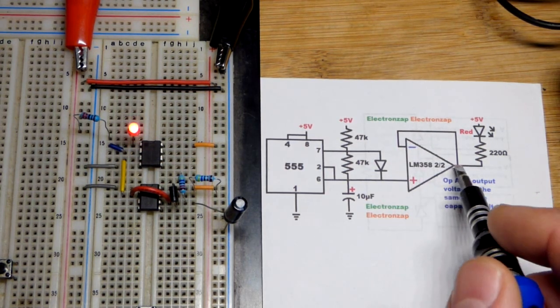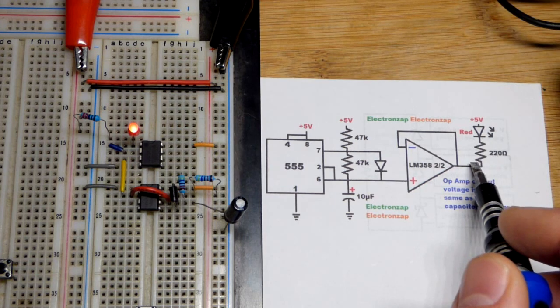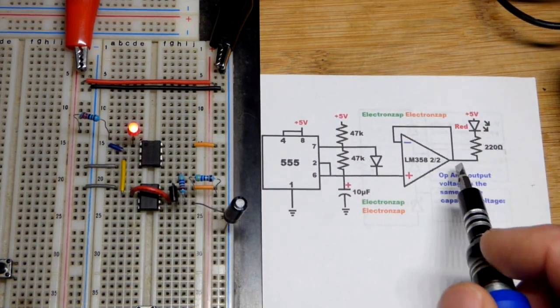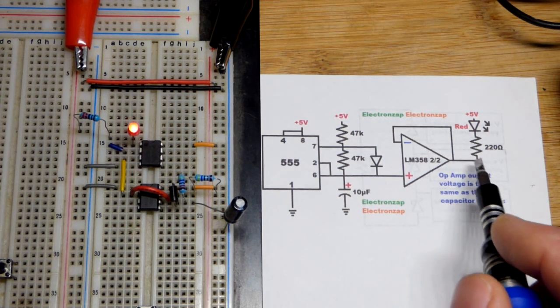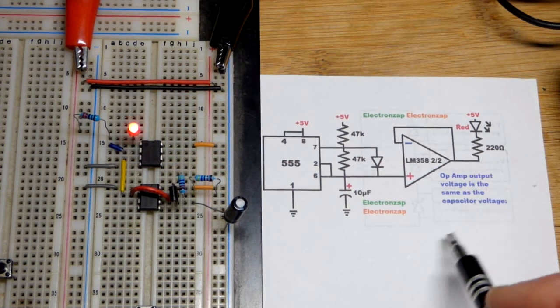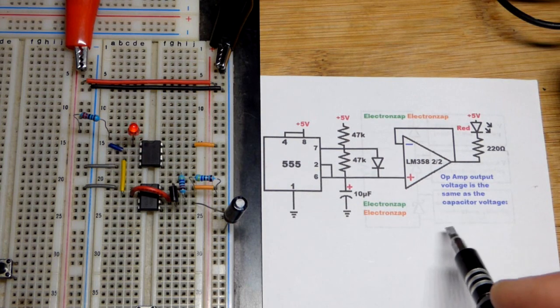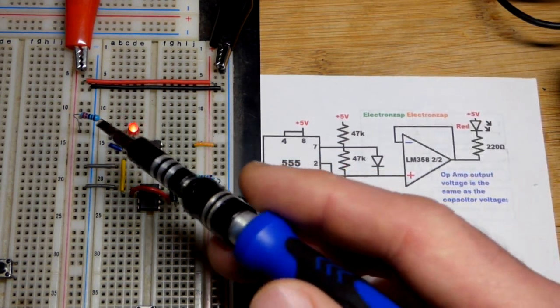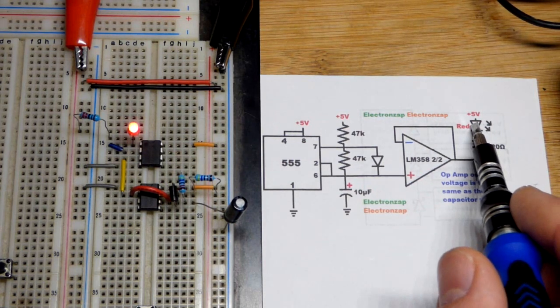Then we have the LED right there. Normally I have red LEDs at the output and then headed to ground through the red LED and its current limiting resistor. Here we have the LED coming from the positive supply so I swapped the positions there.